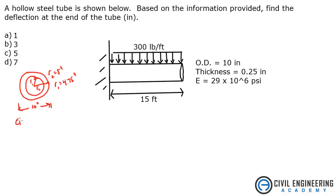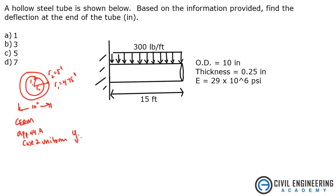The first thing I'm going to do is go to the Civil Engineering Reference Manual, Appendix 44.a. In the edition I'm using, it has a Case 2 for uniform loads. It looks exactly like what we're dealing with here, and that tells us that Y max, the maximum deflection, is WL to the 4th over 8EI.